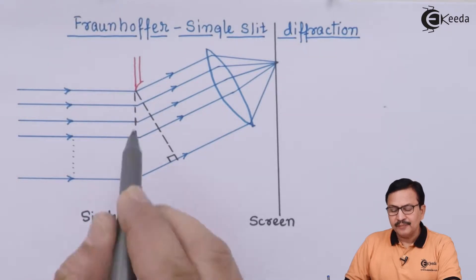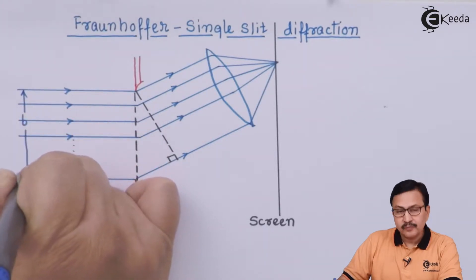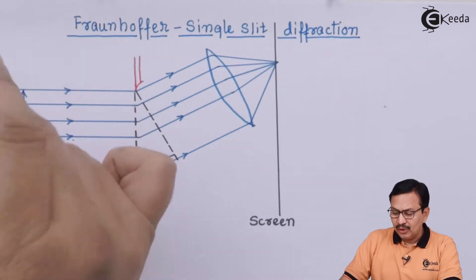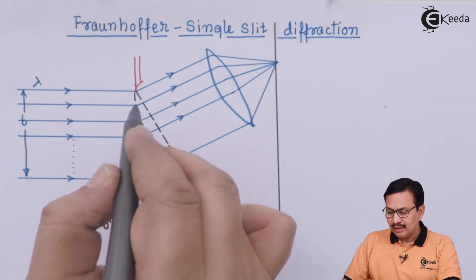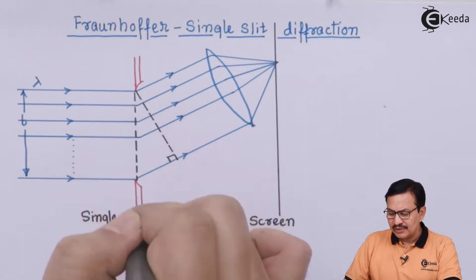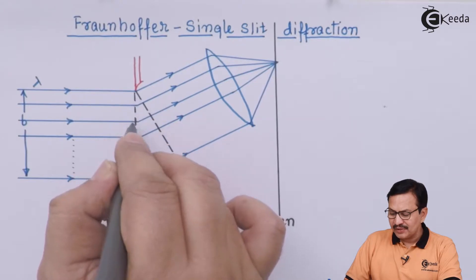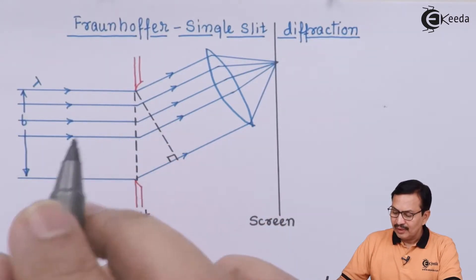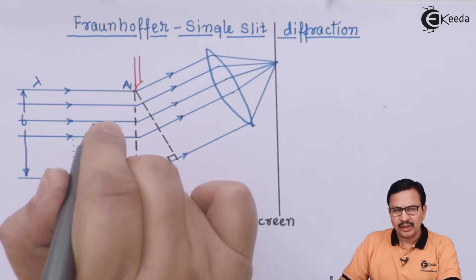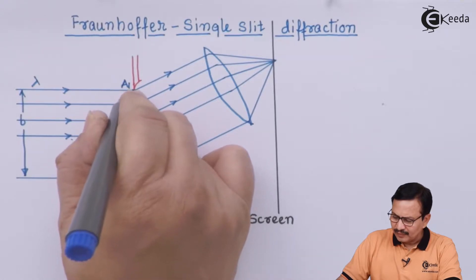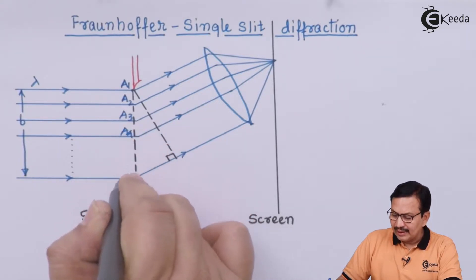We have a single slit with width b. Monochromatic light of wavelength lambda is incident on the single slit. The moment the monochromatic light interacts with this part of the single slit, Huygens secondary wavelets are produced at these points in the plane of the single slit. I label these Huygens wavelet sources as a1, a2, a3, a4, and so on up to an.